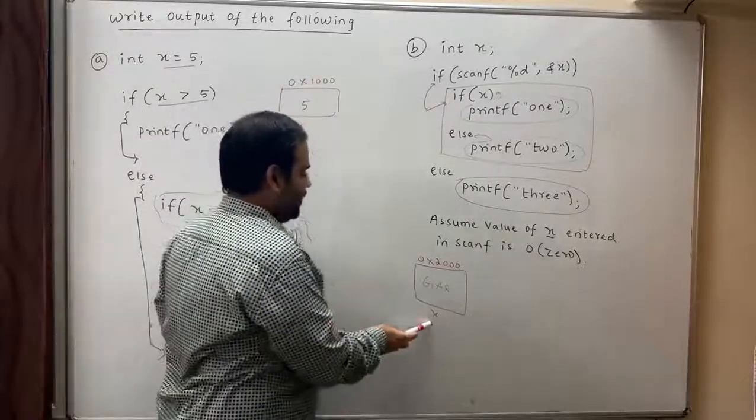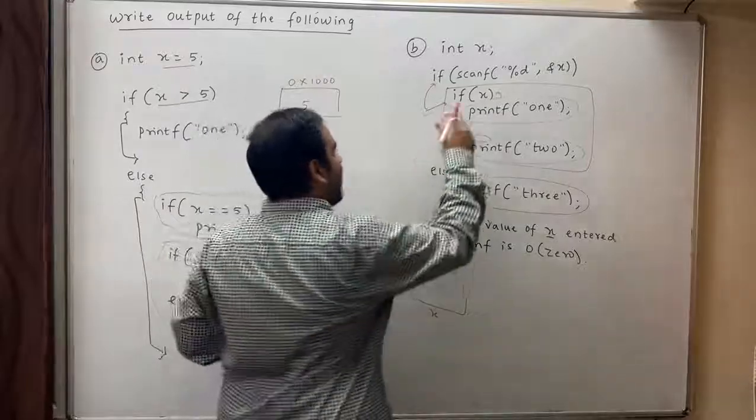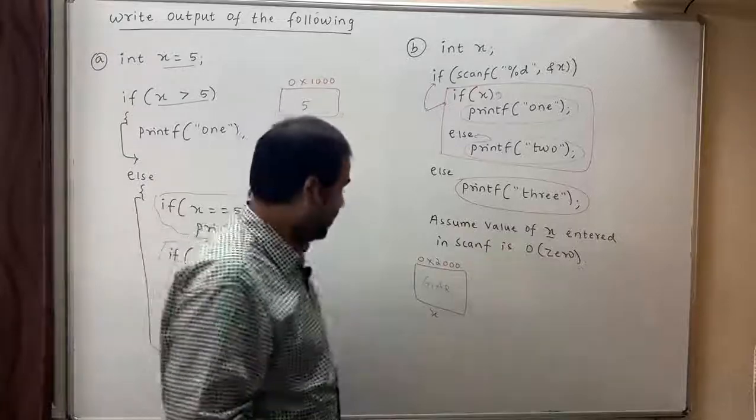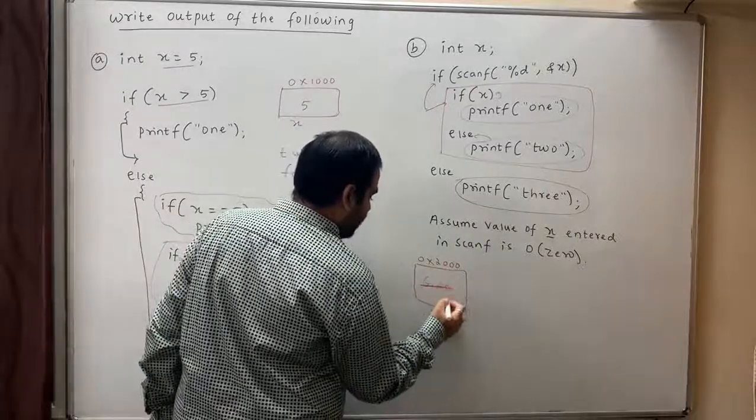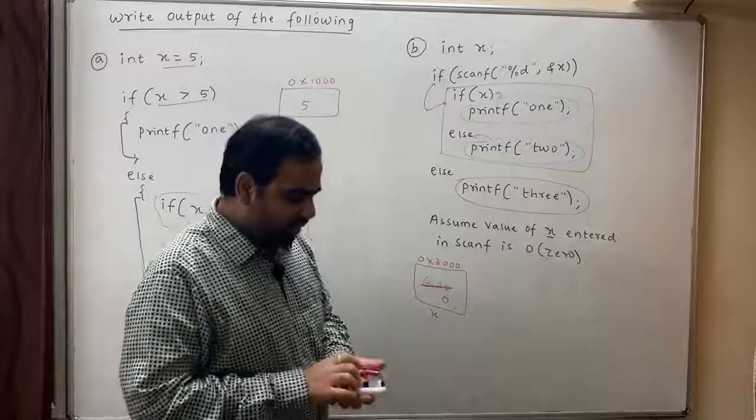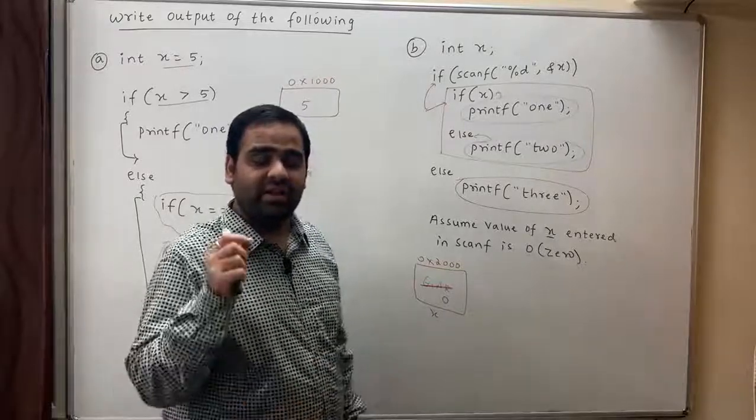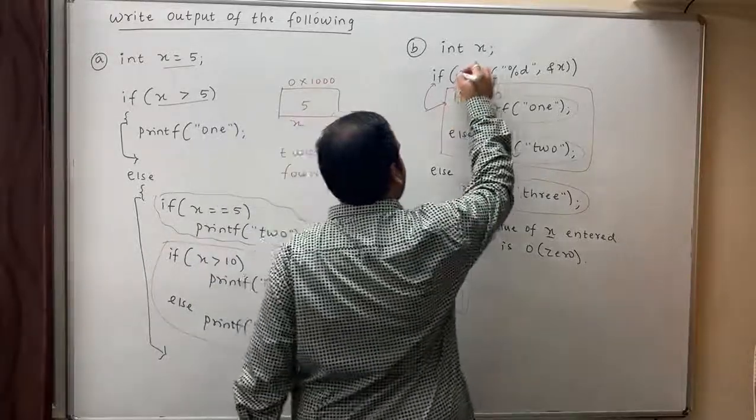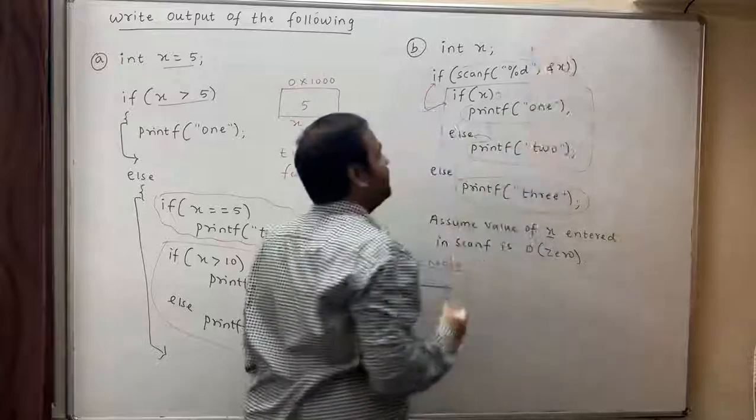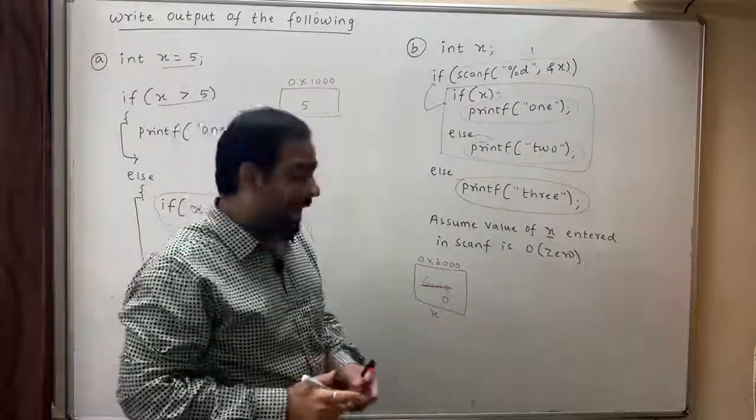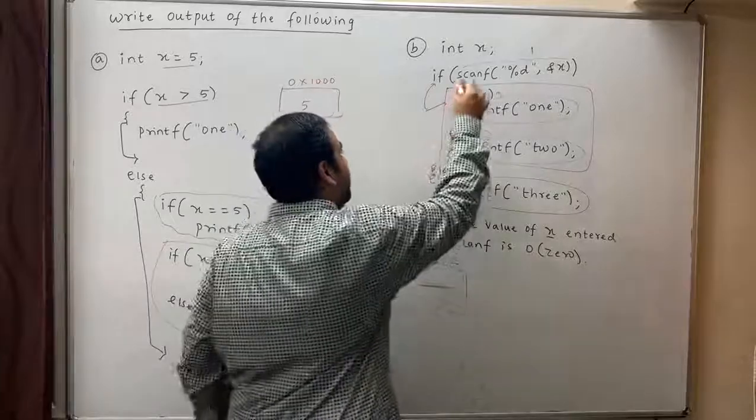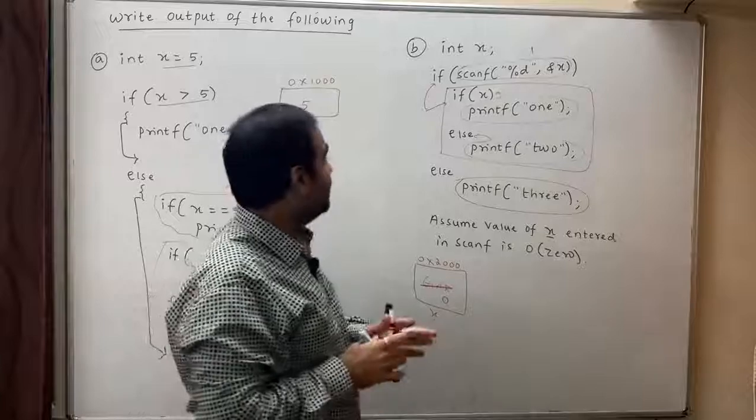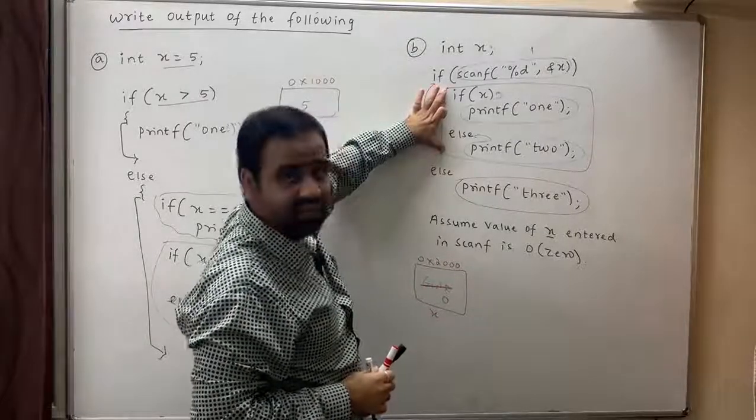How does it evaluate? There is a variable x whose value is garbage. We say scanf read the value of x. Assume the value of x entered is zero, that means this garbage is overwritten with zero. What does scanf return? Scanf returns the number of variables successfully read. How many variables are being successfully read over here? This is one variable which is being successfully read, and the variable is x. That means this complete scanf is replaced by one.